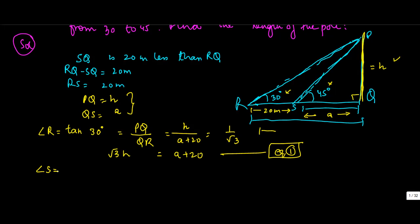Similarly, looking at angle S which is 45 degrees, the relationship between this angle and sides PQ and SQ is again tan. So tan 45 degrees equals PQ upon SQ, which is H upon A. We know that tan 45 degrees equals 1, so H equals A.